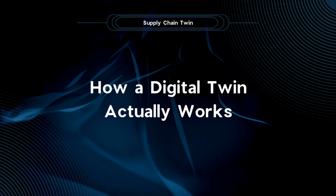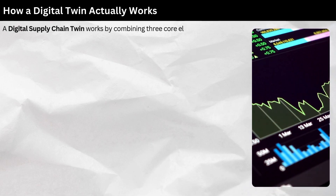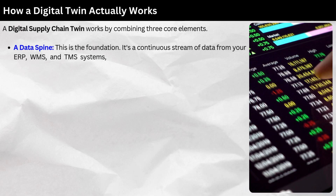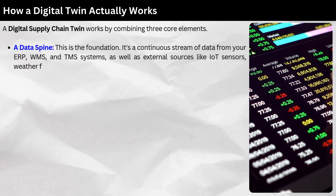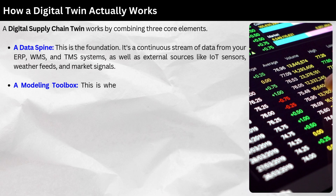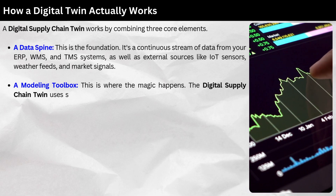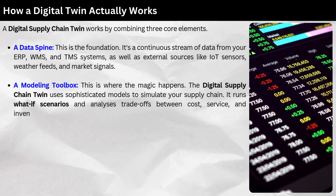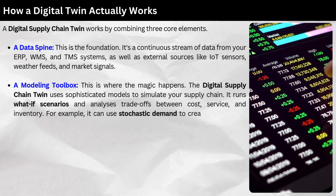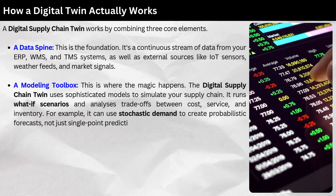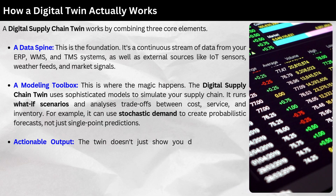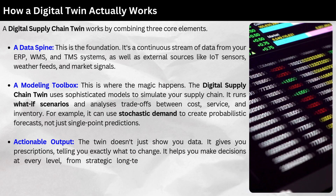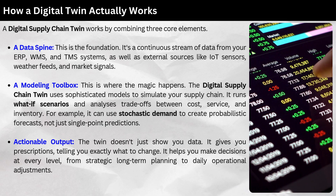How a digital twin actually works. A digital supply chain twin works by combining three core elements. First, a data spine — the foundation. It's a continuous stream of data from your ERP, WMS, and TMS systems, as well as external sources like IoT sensors, weather feeds, and market signals. Second, a modeling toolbox — this is where the magic happens. The twin uses sophisticated models to simulate your supply chain, runs what-if scenarios, and analyzes trade-offs between cost, service, and inventory. It can use stochastic demand to create probabilistic forecasts, not just single-point predictions. Third, actionable output — the twin doesn't just show you data; it gives you prescriptions, telling you exactly what to change, and helps you make decisions at every level from strategic long-term planning to daily operational adjustments.